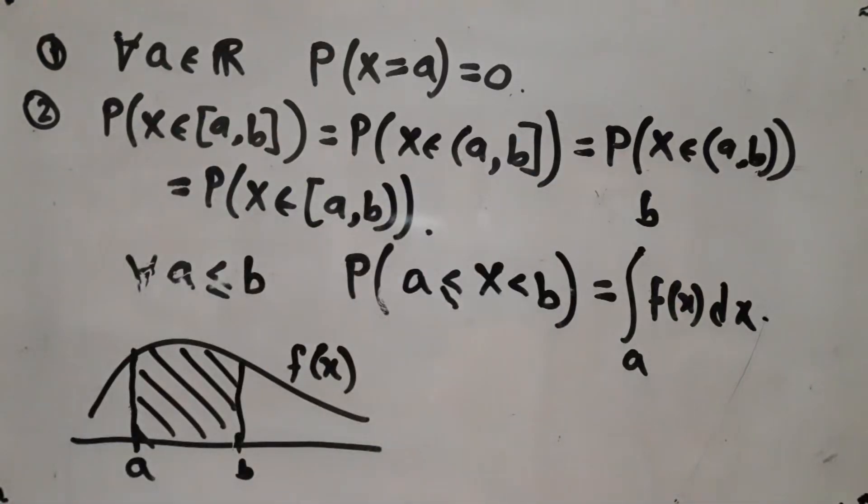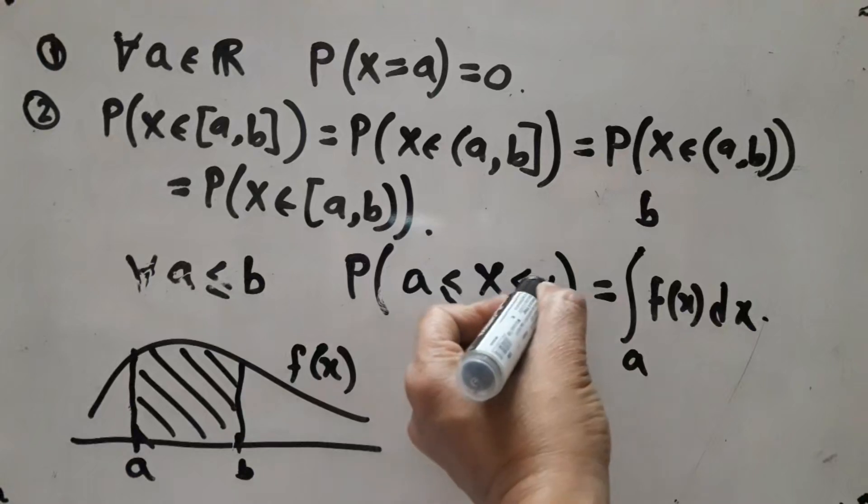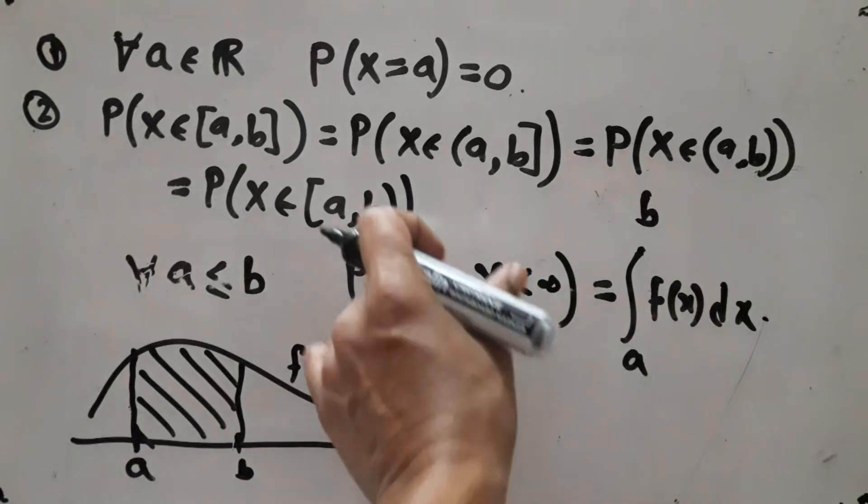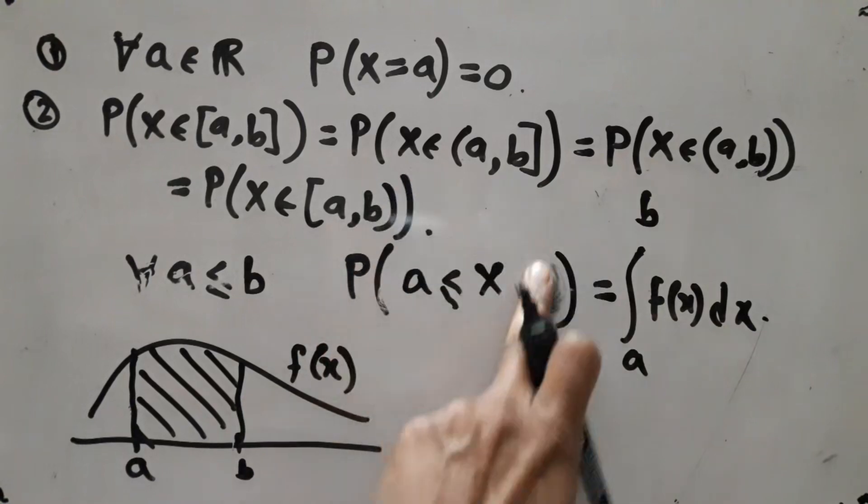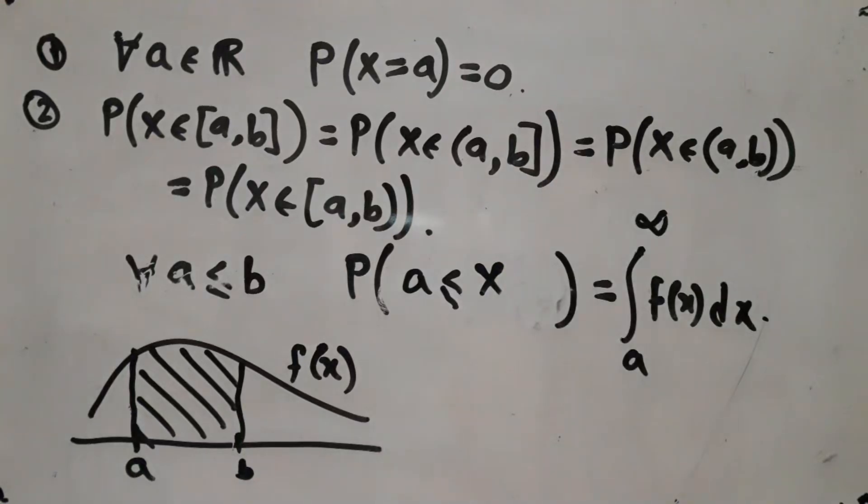Okay, now if I let this b go towards infinity, then our event that X lies in a to b also increases, and by continuity of probability I can say that if I make this go all the way to infinity, basically this condition, well ideally do not need to write this condition because X being a real valued random variable must be less than infinity, is actually this improper integral from a to infinity f(x) dx. Similarly you can let this end go towards minus infinity and you can put minus infinity over here.